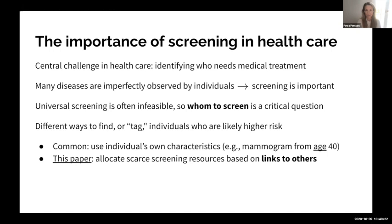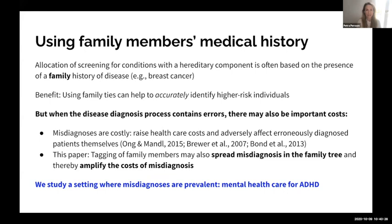We focus on family ties. Allocation of screening for conditions with a hereditary component is often based on the presence of a family history of the disease — breast cancer is a good example. The benefit of this is obvious: precisely because these conditions are hereditary, using family ties can help us accurately identify higher-risk individuals. But we emphasize that when the diagnosis process contains errors, there may also be important costs of using family ties.